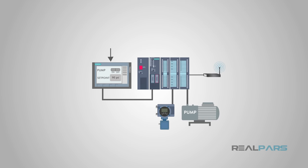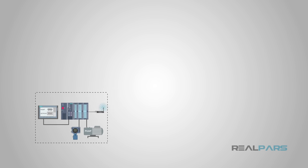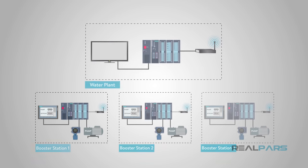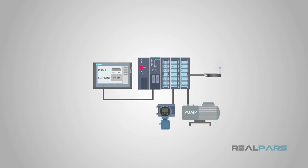An HMI is essentially a user control station, usually in the form of a touch screen or a screen with some buttons attached. They are typically tied to a machine or process. Most HMI applications have the screen tied to a PLC that it is compatible with. Certain functions and sensors can be programmed to monitor and control on the screen itself.